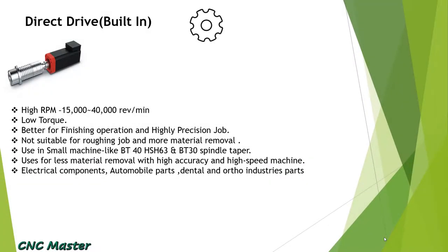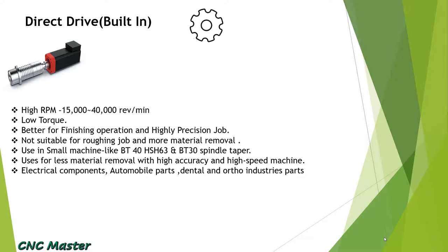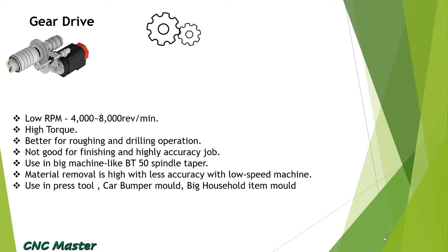Direct drive: it is called a direct drive spindle because the spindle is directly connected with the spindle motor. The RPM range is from 12000 to 15000. It is a low-torque spindle, better for precision with good surface finish, not suitable for roughing operation and bulk material removal. It is used in small machines like BT40, HSK63, and BT30. It is used for less material removal and high-speed machining.